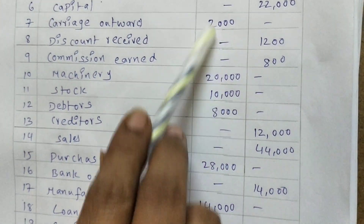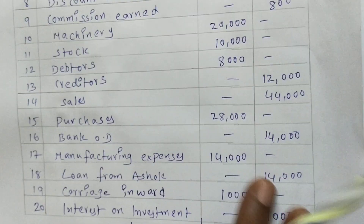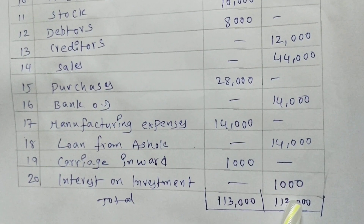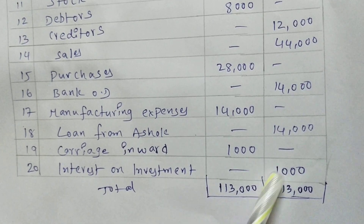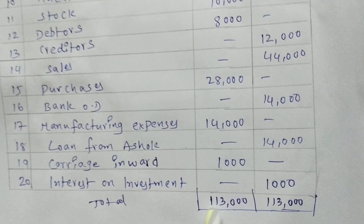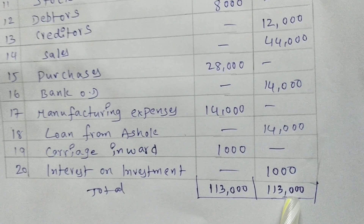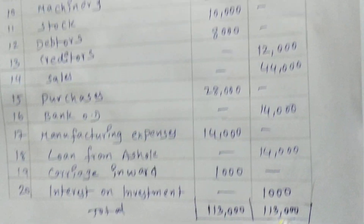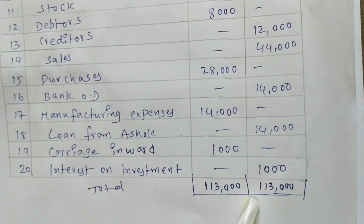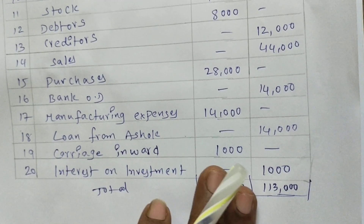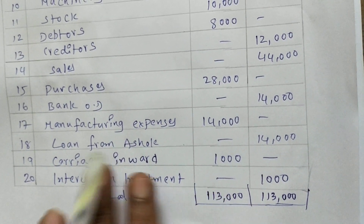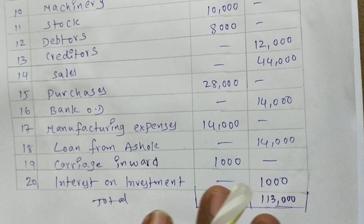We have now posted all the transactions. Add both sides — both sides should show the same balance. Both amounts are equal: 1,13,000 and 1,13,000. Both amounts are equal on both sides, which means no mistakes have happened in posting.